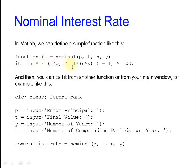In MATLAB, we can define a simple function like this. We give it a name, in this case it's nominal. We have the four input parameters. We assign an output variable, in this case it is IT. This line shows the codification of the formula given before. Use parentheses when needed.